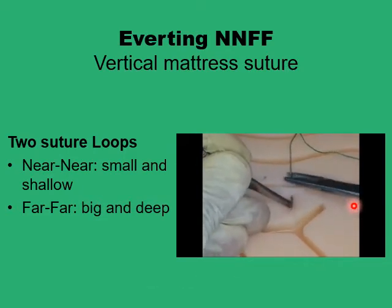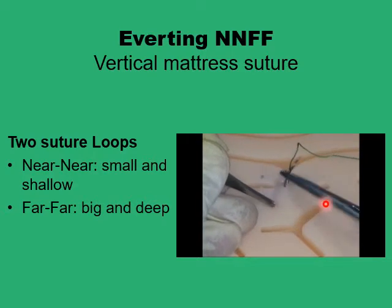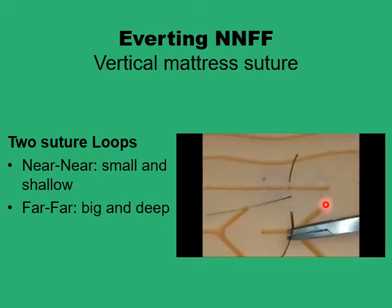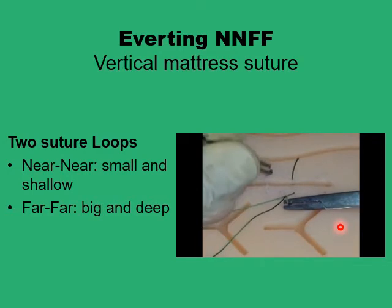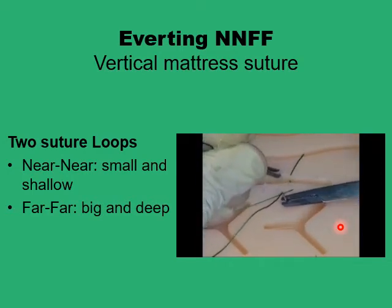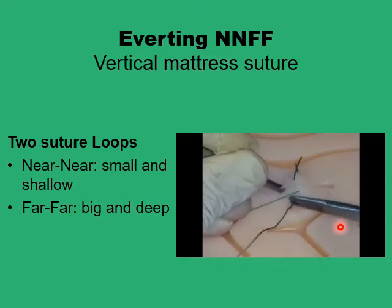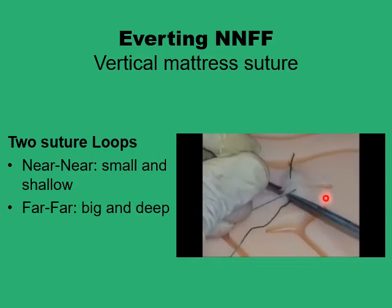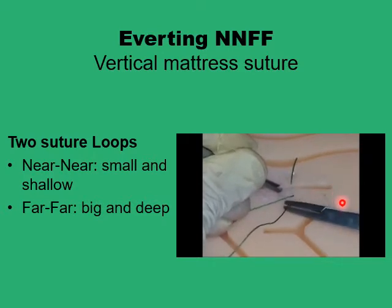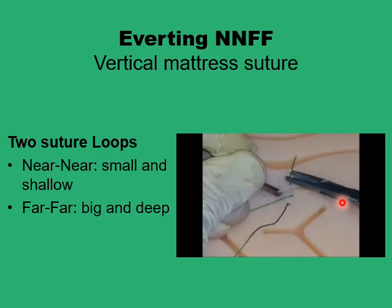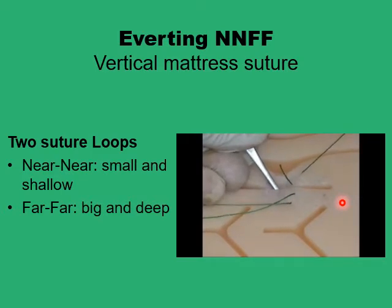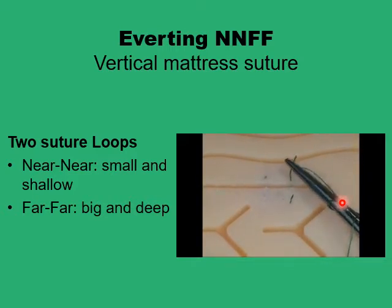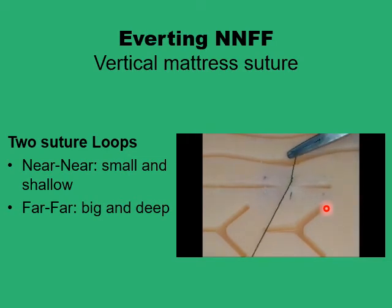Here you start by doing the near-to-near loop first, which is the shorter and shallower of the two, then go back a little bit and produce the other loop — the deeper and longer far-to-far loop. The advantage of this technique is that it gives better skin edge opposition, but it ends up producing a similar eversion to the traditional far-far near-near vertical mattress. Both produce a very consistent eversion of the wound edge.